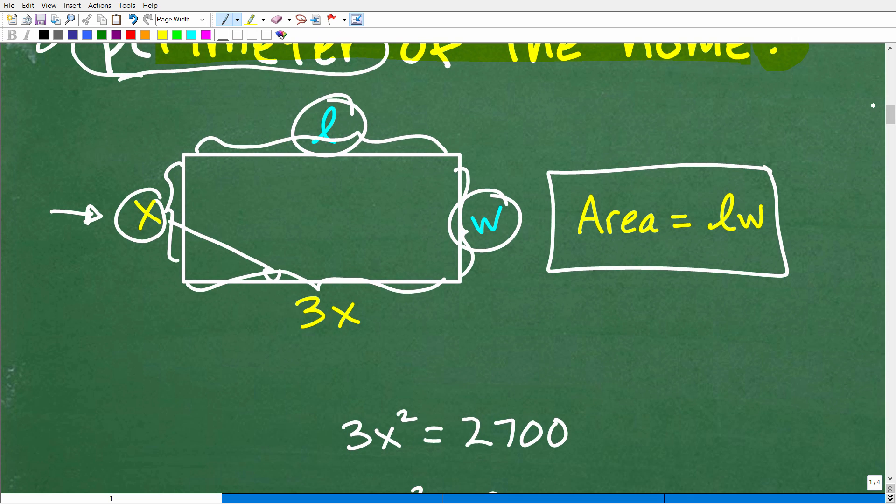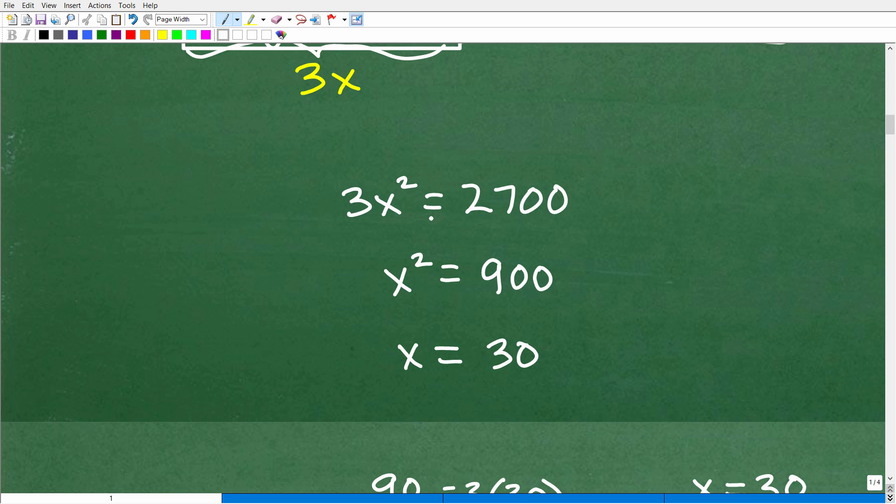So let's go ahead and write an equation because once we have variables set up to represent what's going on in the problem, we need a way to solve for what those variables are. We need an equation, right? So the length times the width here, that'd be three X times X, that'd be the area is going to be equal to 2,700 square feet. So we have this equation right here, three X squared is equal to 2,700. So let's go ahead and solve for X. So the first thing we need to do here is divide both sides of the equation by three and we get X squared is equal to 900. Now to solve this quadratic equation, we're going to go ahead and take the square root of both sides. Technically the answer here is going to be X is equal to positive or negative 30, but because we are dealing with distance, we're talking about the measurements of a home. We can throw out that negative 30 and just keep that positive 30 as our answer.